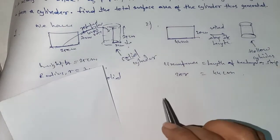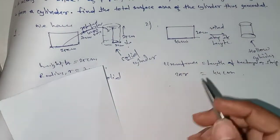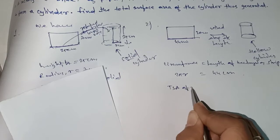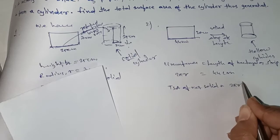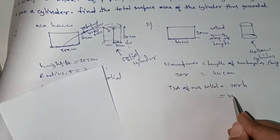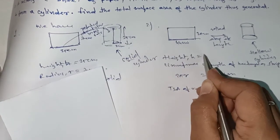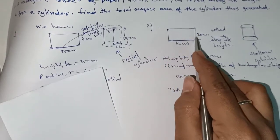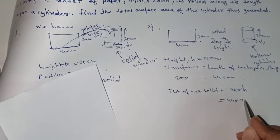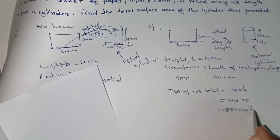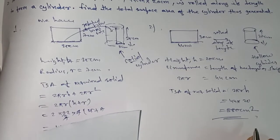The total surface area of the required solid (hollow cylinder) is the curved surface area: 2πrh, where 2πr = 44 and the height h = 20 centimeters — the breadth becomes the height and remains 20 centimeters. So the answer is 44 × 20 = 880 centimeters squared.